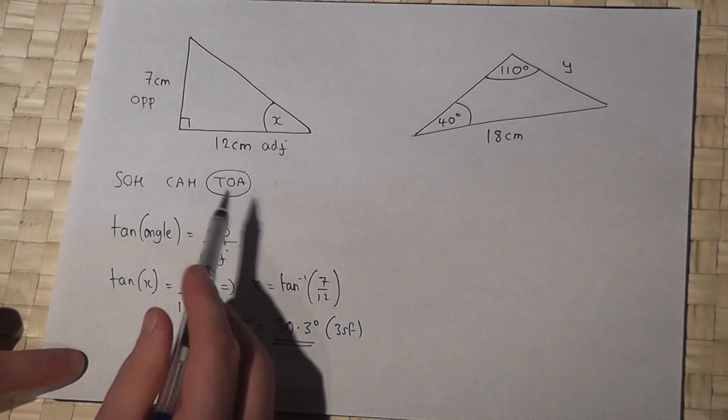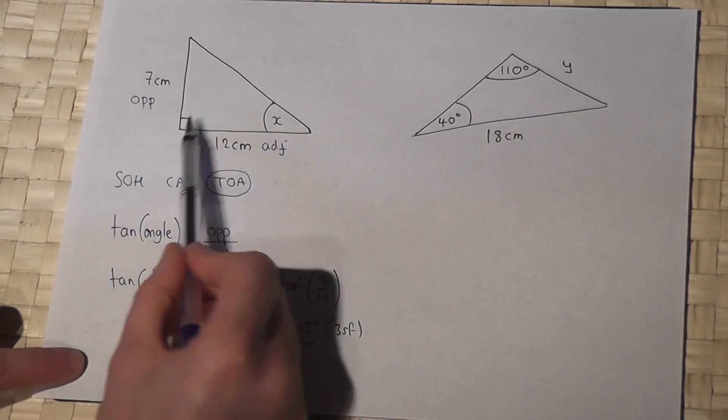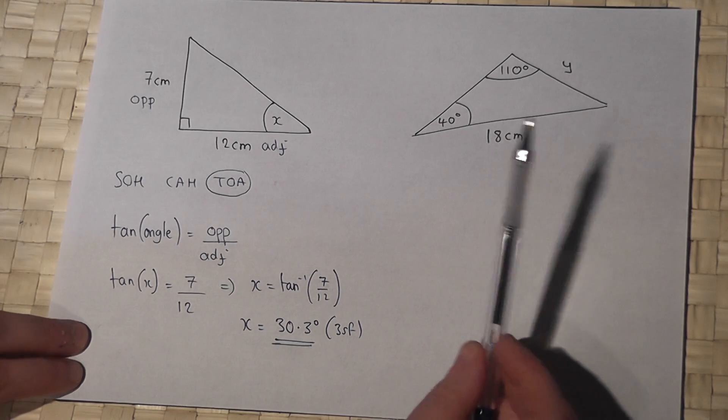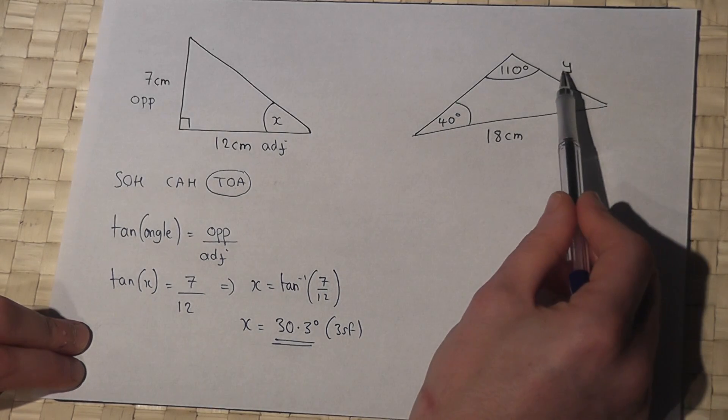So, SOH CAH TOA gives us three equations to use for right-angled triangles. Now then, in the second problem, there are no right angles. And I'm asked to find side y.